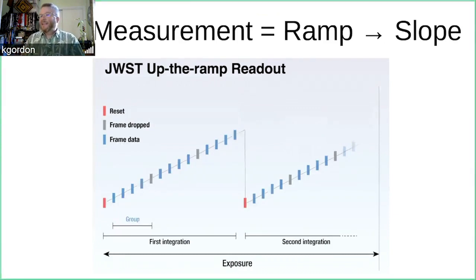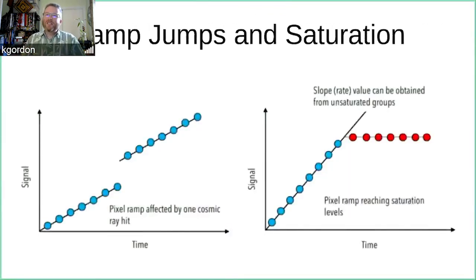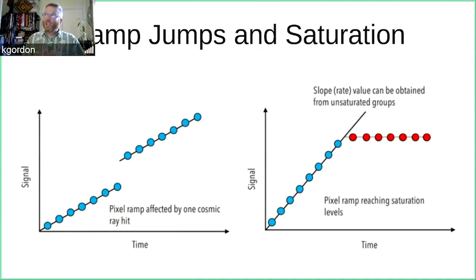You can do a reset and restart the ramp, making multiple integrations in a single exposure. On board JWST, frames are averaged together to make groups to save on data rate. One useful implication: if you get a cosmic ray hit in the middle of your ramp, it doesn't corrupt the entire measurement. The cosmic ray deposits charge at a certain time, creating a jump — a step function inserted into your linear ramp — and you can develop algorithms to detect that jump.